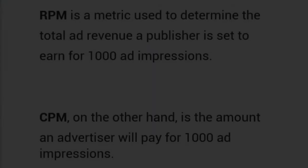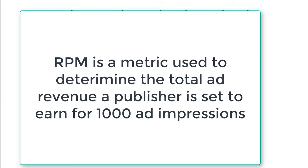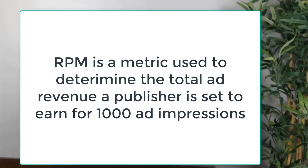RPM is a metric used to determine the total ad revenue that a publisher is set to earn for 1,000 ad impressions. That is what I reap — RPM. If there's 1,000 impressions, the RPM is what I'm going to make from those ads because they're on my video. I remember that R — you will reap it, you collect it, it's mine.